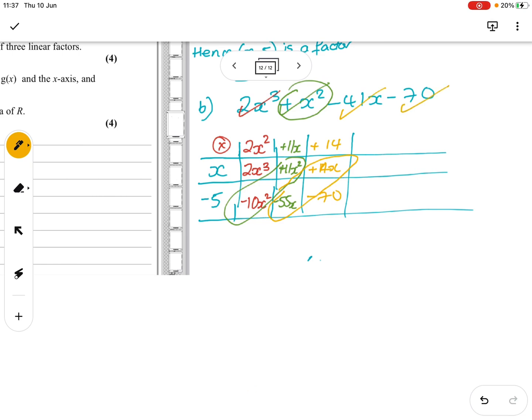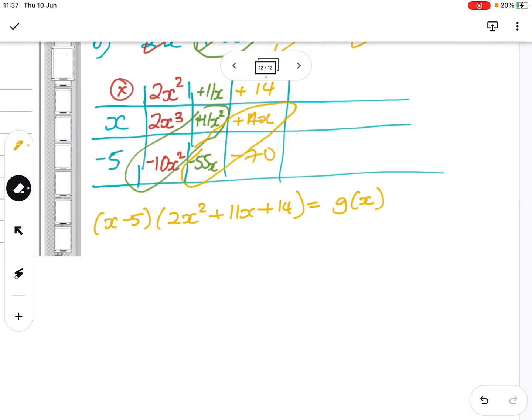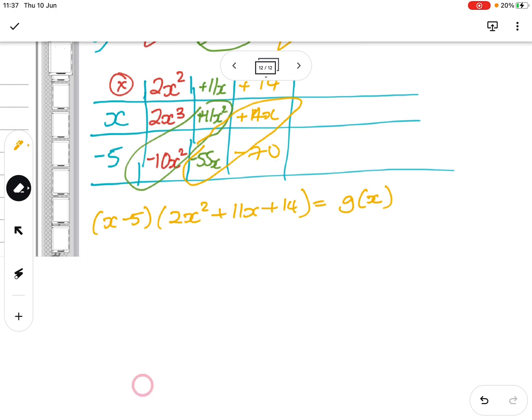So if I multiplied x - 5 by 2x² + 11x + 14, I would get my g(x). But at the moment, I haven't fully factorised it, so I have to see if I can. So I've got x - 5 as my first factor. It's got to be 2x because x is prime. And I've got 1 and 14, 2 and 7. So 2x7 is 14.